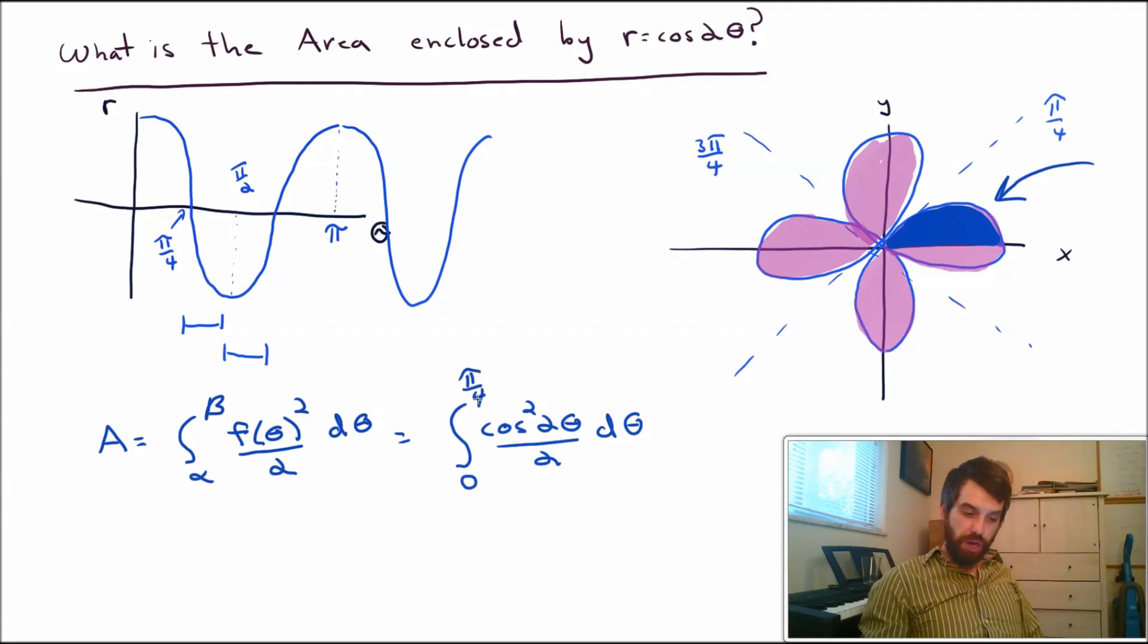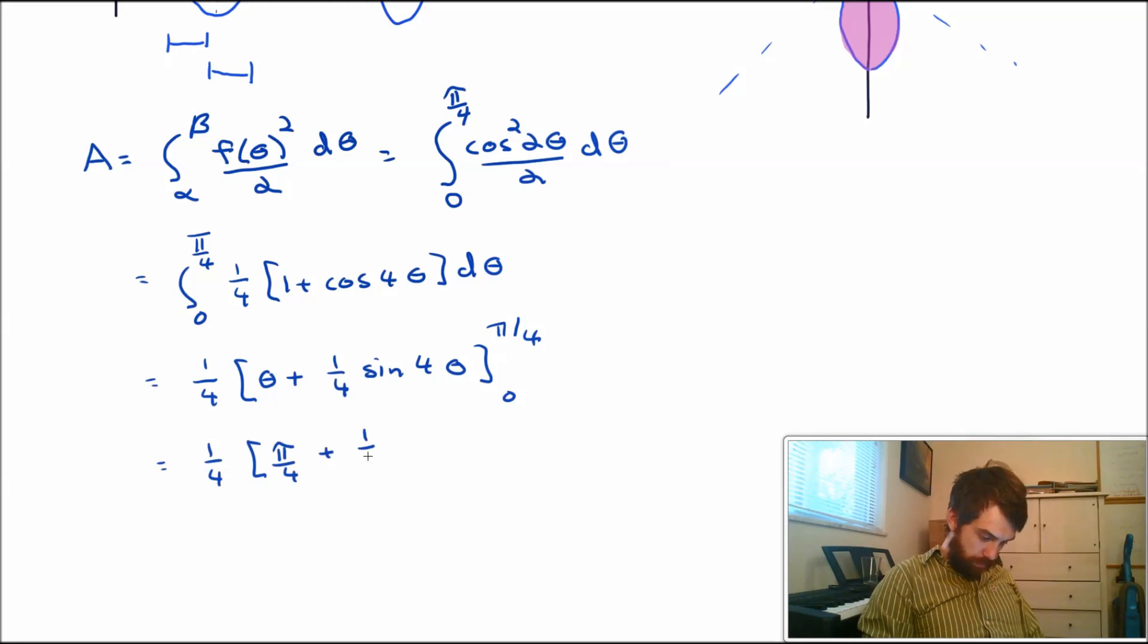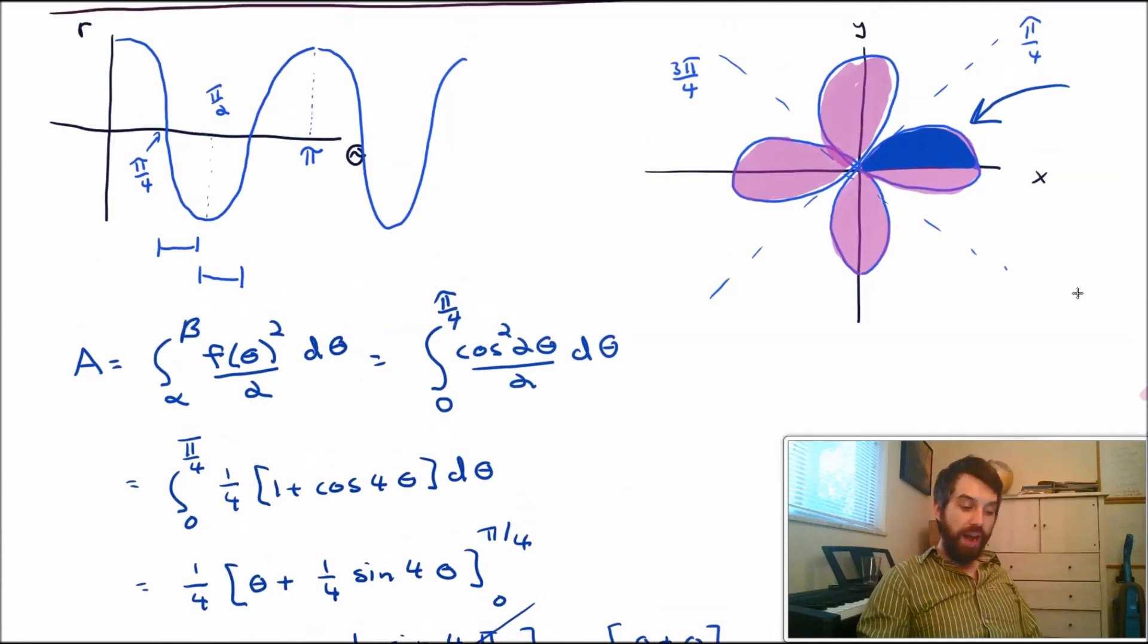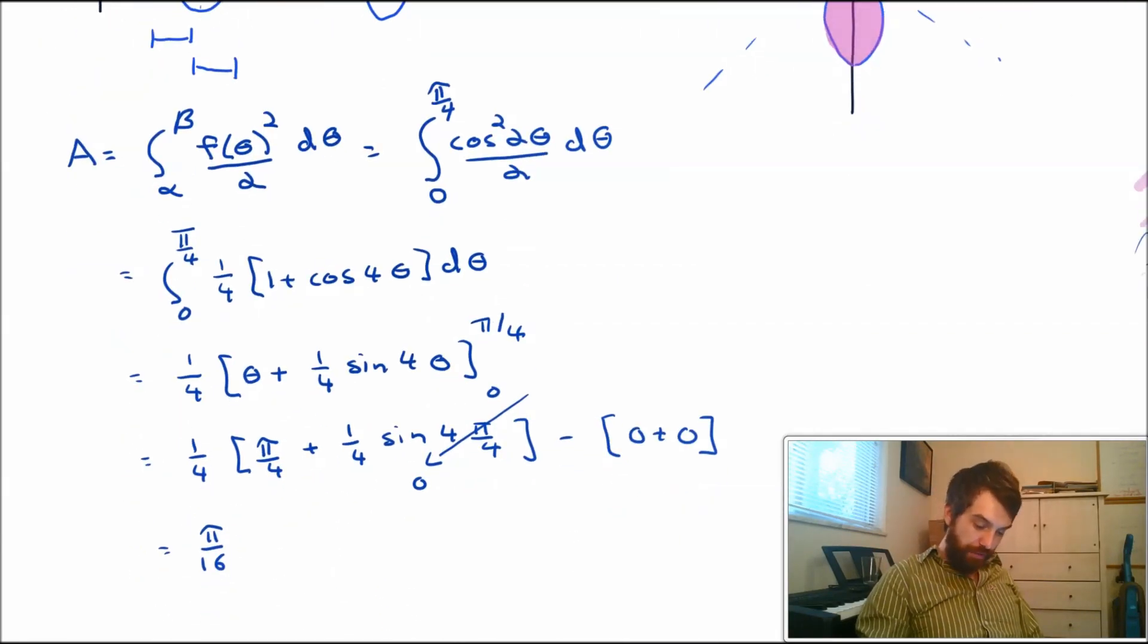And now this is just a computation. So expanding out, I get this final answer. And if you remember, this was going to be the region just for 1 eighth of the total thing. And so if I really want to get a truly final answer, that implies that my area is 8 times this. And so pi divided by 2.